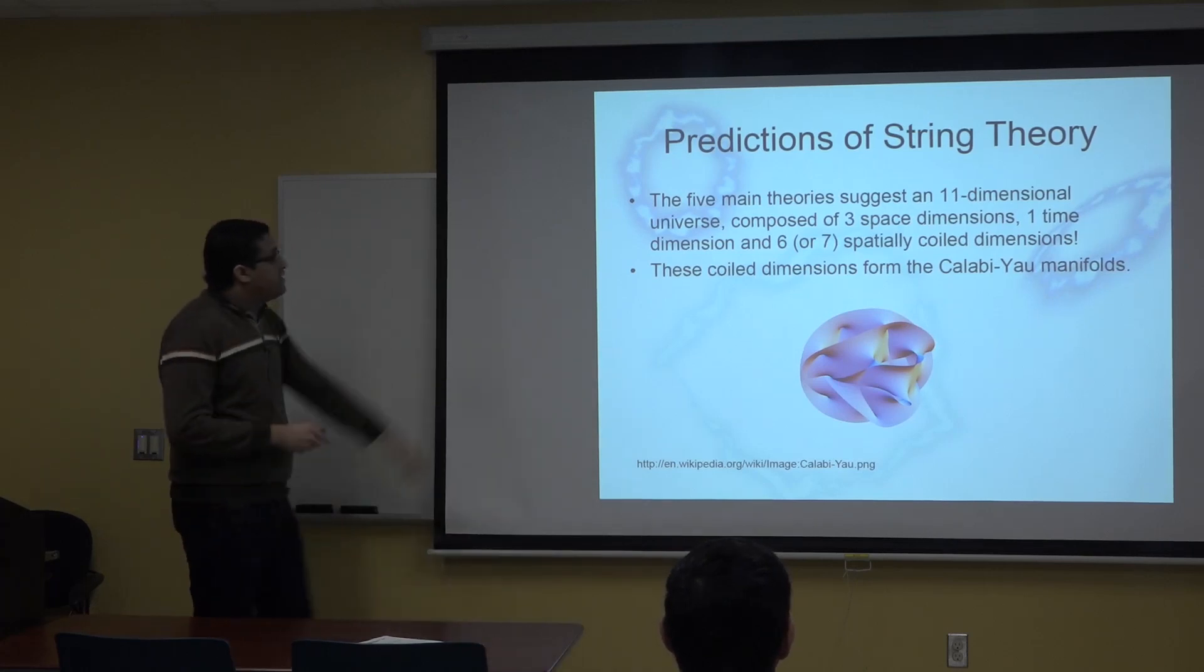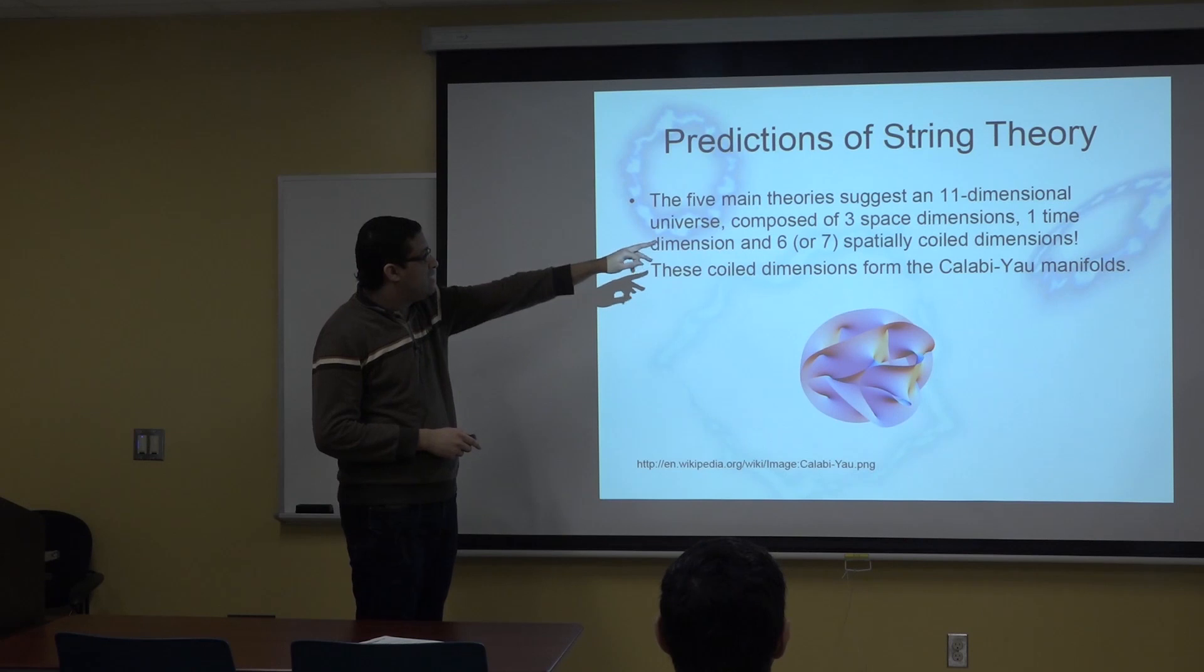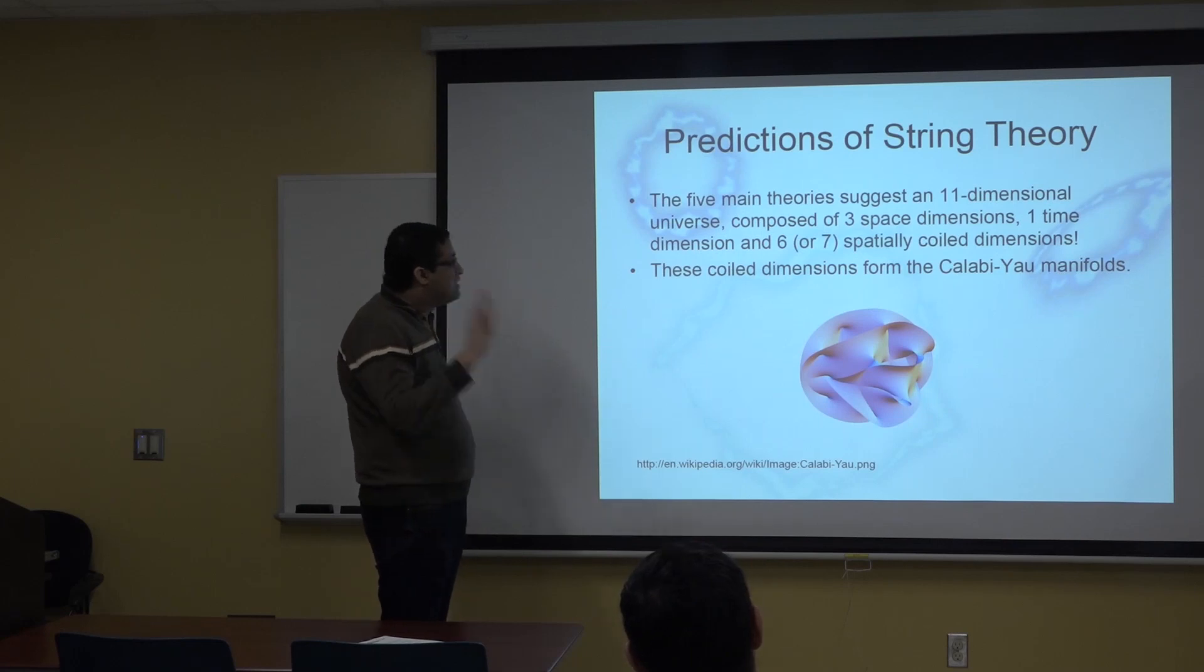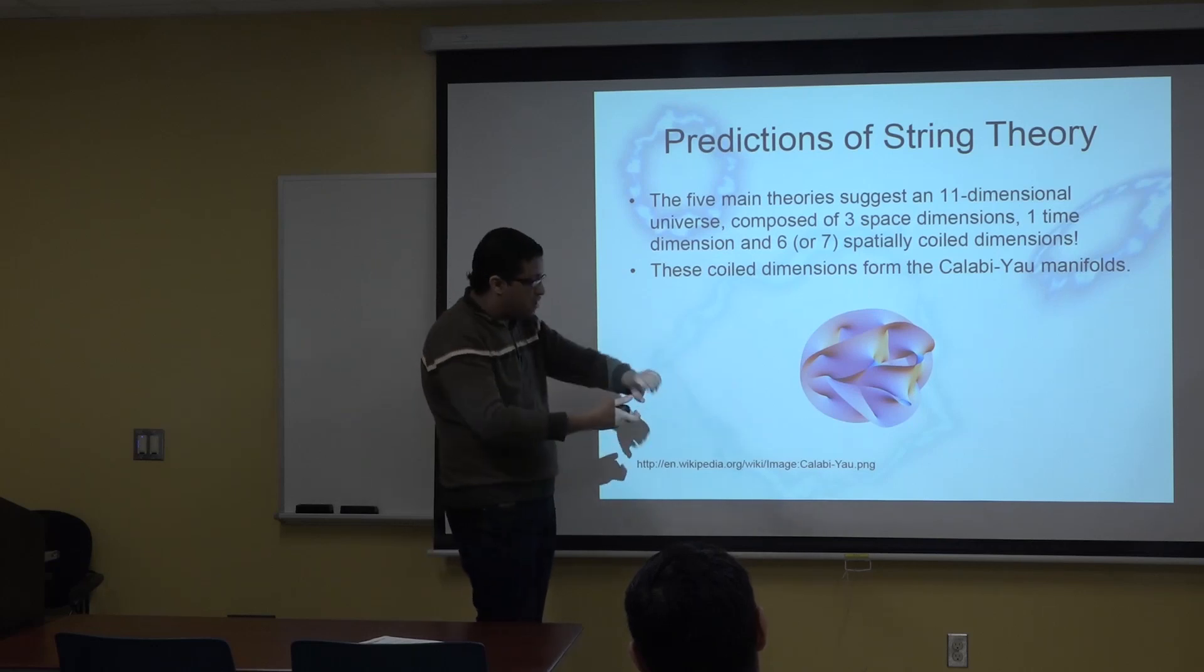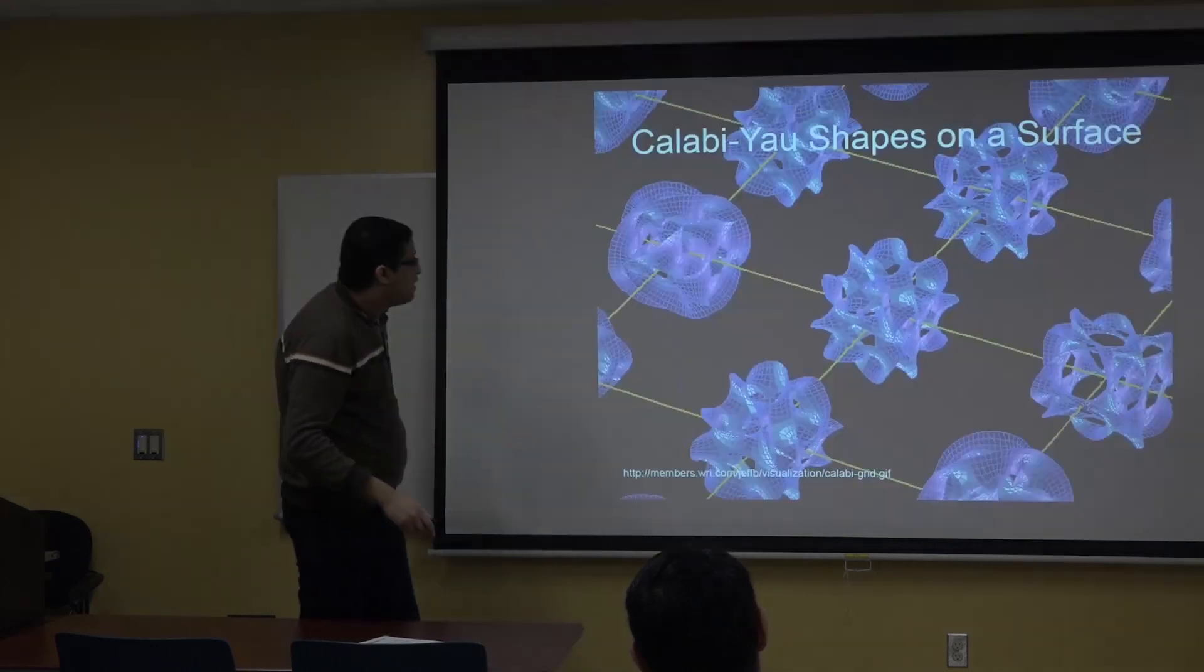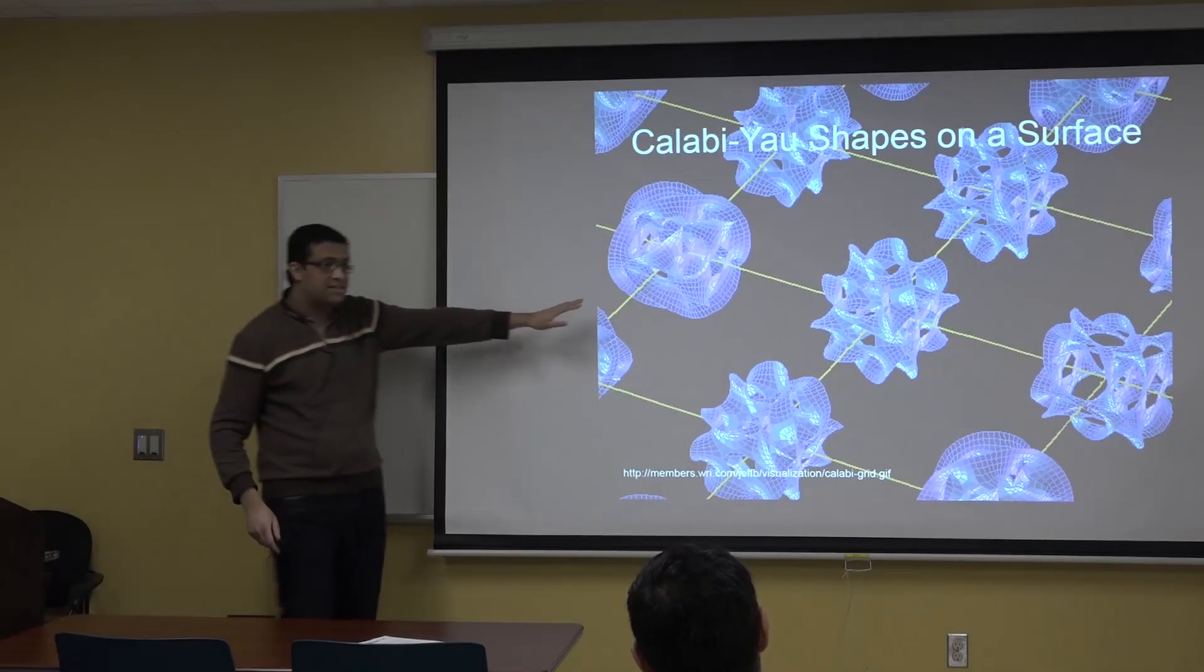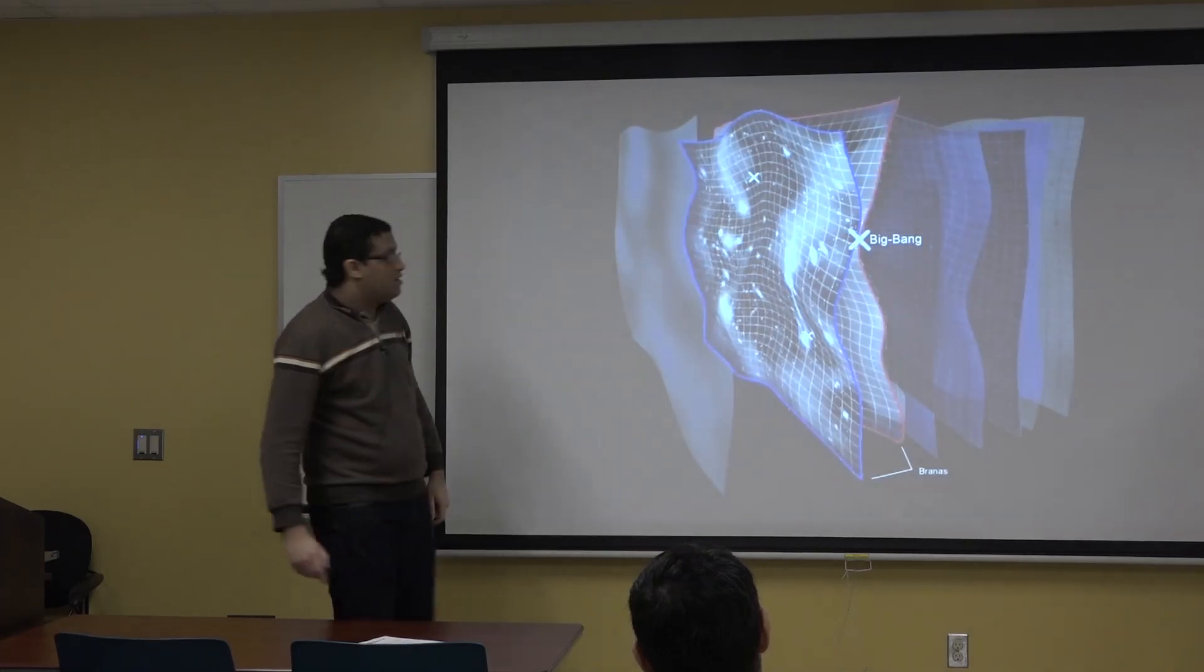We prove that strings should live in 11 dimensions: three spatial dimensions with six compactified dimensions and a time. This is how it looks like—the string in six dimensions with the three space and one time. As I said, the five main theories suggest an 11-dimension universe composed of three space dimensions, one time, and six spatially compactified dimensions called Calabi-Yau manifolds. This is how it looks like, the strings at the small scales.